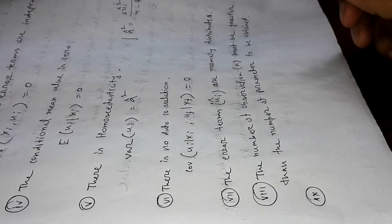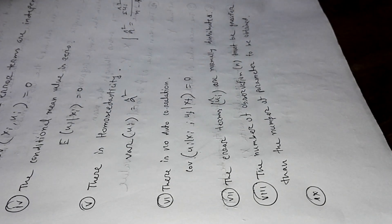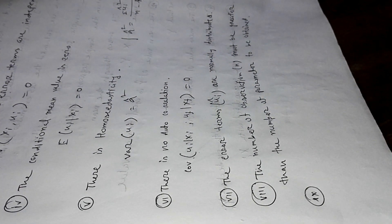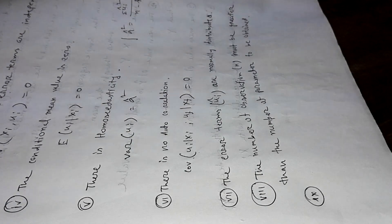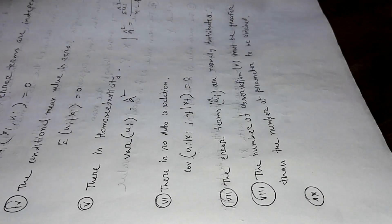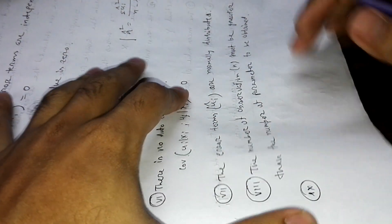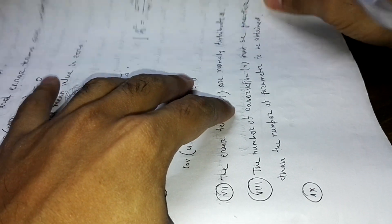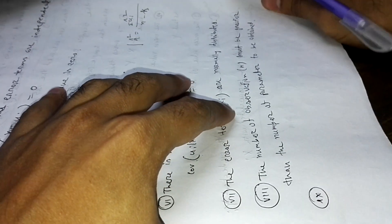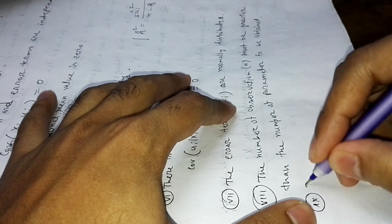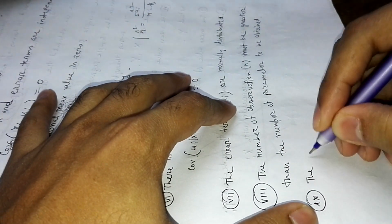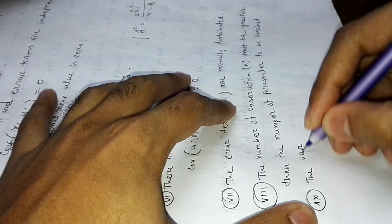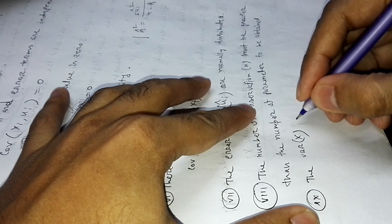The ninth property is that the variance of X — the independent variable — must be a positive number.